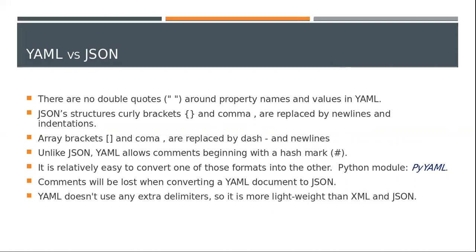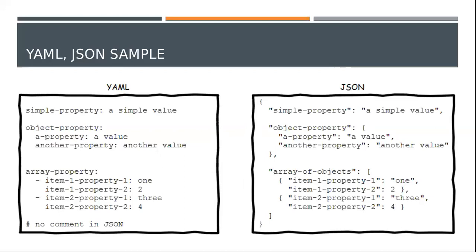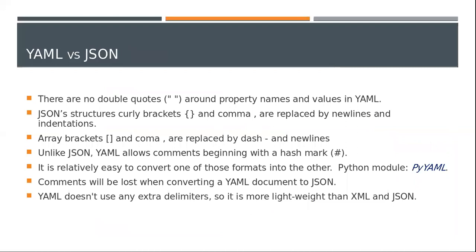Unlike JSON, YAML allows comments beginning with a hash mark — the same as Python, which uses the hash symbol for comments. Similarly, Python uses indentation to represent code blocks, and YAML also uses indentation to represent key-value pairs and nested structures. YAML does not use any extra delimiter apart from the colon, making it more lightweight than XML and JSON. XML has start and end tags; JSON has braces and quotes. In YAML there is only content with indentation and hyphens.